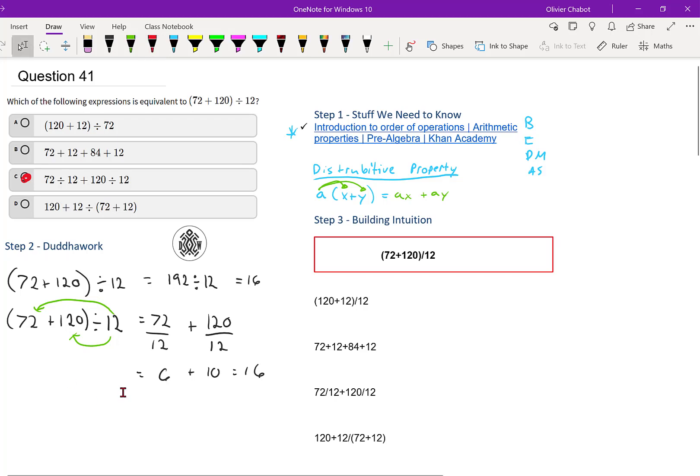But if you want, the way that will always work for this type of question is you just type it into your calculator, you get 16. Option A, you get 11. Option B, you get 180. Answer C, you get 16. D, you get 120.14. So obviously this is your right answer.